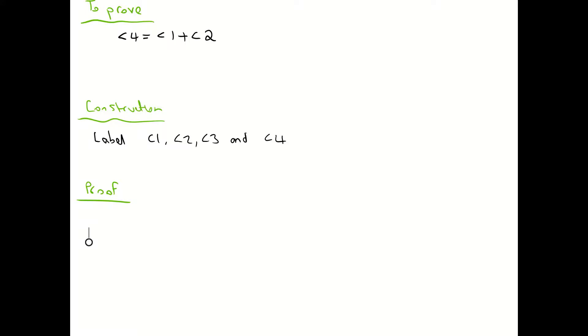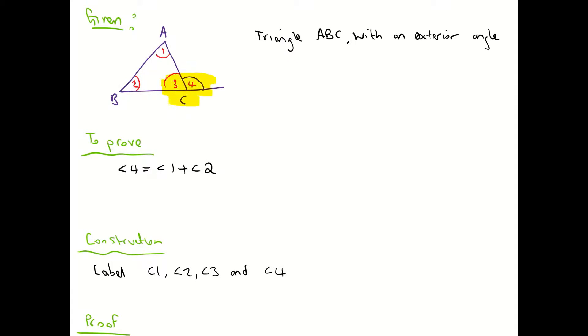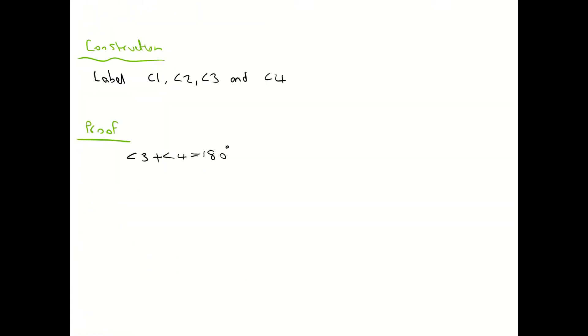Well, we do know that angle three plus angle four is equal to 180 degrees. And why is that? Because if we come up, angle three and angle four are on a straight line. So that's one thing we know. So angle three and angle four are equal to 180 because they're on a straight line. Now make sure we write our reasoning for our examiner so they know where we're getting this information.